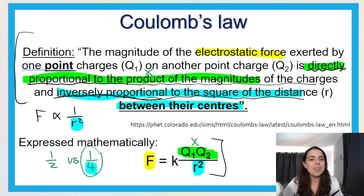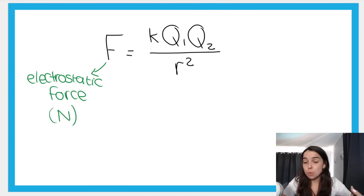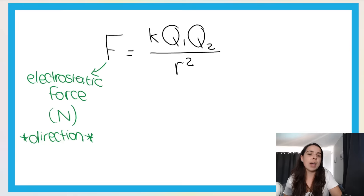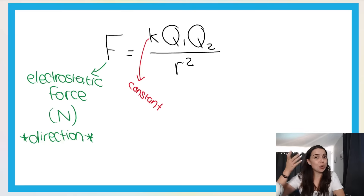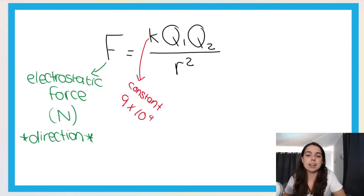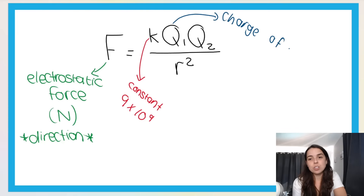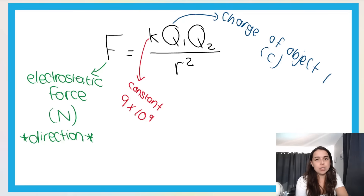Let's look at the different parts of the formula and what they mean, and what their units are. F is electrostatic force, measured in Newtons. Because it's a force, you need to give a direction — unless they say magnitude, in which case no direction is needed. K is Coulomb's constant — a physical constant that will always be 9 × 10⁹ — and it is given on your formula sheet. Q1 is the charge of object 1, measured in Coulombs. If they give the charge in anything other than Coulombs — such as nanocoulombs or picocoulombs — you must convert.